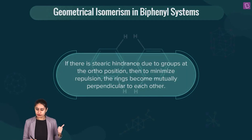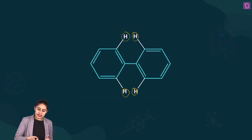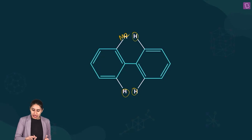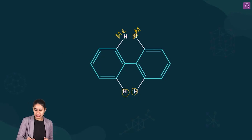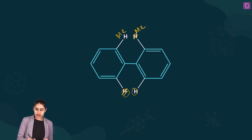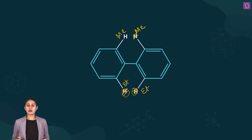Imagine the two phenyl rings are here. Now, instead of hydrogen, imagine a methyl group attached at one ortho position, another methyl group at the other ortho position, an ethyl group instead of this hydrogen, and another ethyl group at the remaining ortho position.